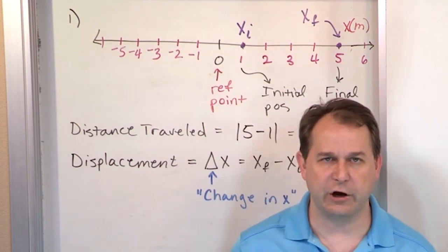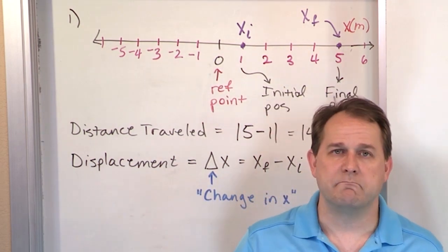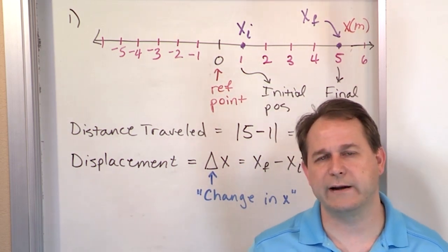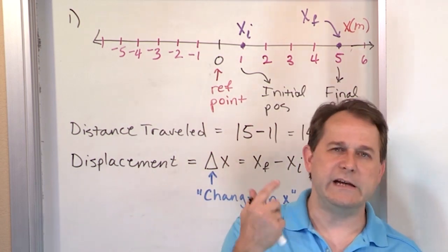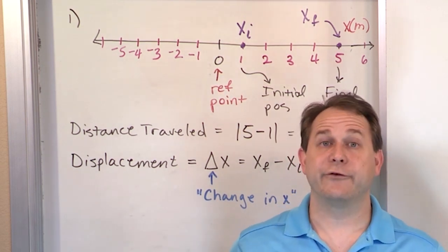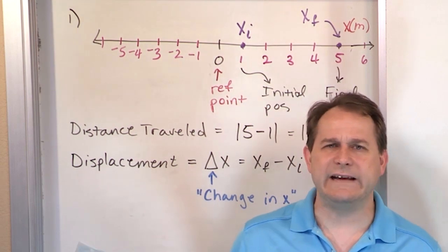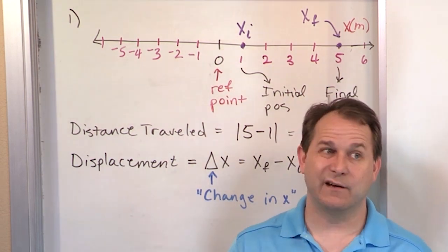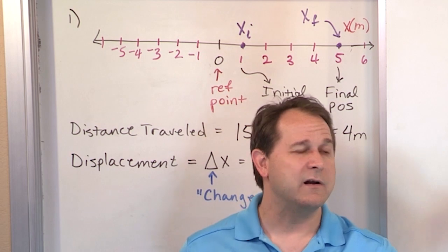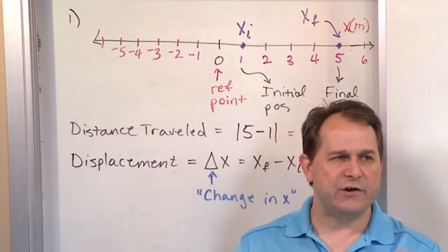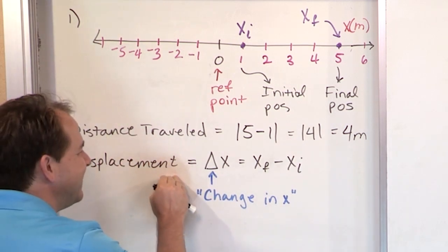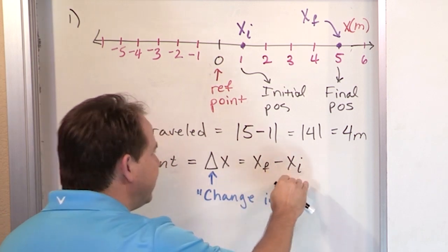And the way you find change is you always take the final value minus the initial value. Think about taking the temperature of water on the stove — your initial value might be 20 degrees Celsius. You turn the heat on, walk away, come back and it's boiling: 100 degrees Celsius, that's your final value of temperature. Delta T means change in temperature: take the final value, 100, minus the initial value, 20, and you calculate that difference. We're just talking about it in terms of displacement — Delta X equals final value minus initial value.